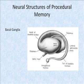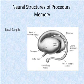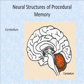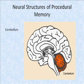The basal ganglia is also involved in procedural memory, consisting of the putamen, the caudate nucleus, and the globus pallidus. Also, the cerebellum, known for coordinating movements, is involved in procedural memory.